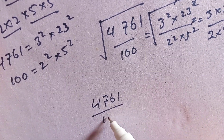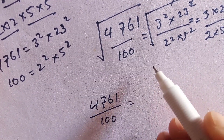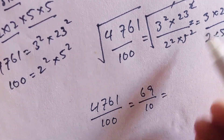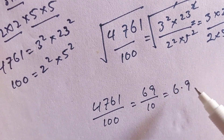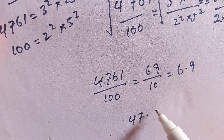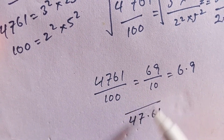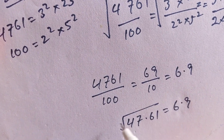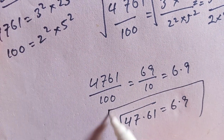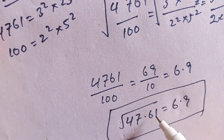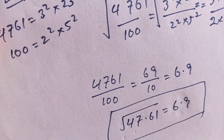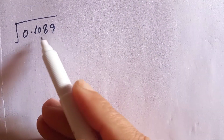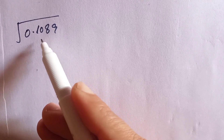The square root of 4761 over 100 equals 69 over 10, which can be written as 6.9. So the square root of 47.61 is equal to 6.9 — that is the final answer. In the next example we are finding the square root of 0.1089.